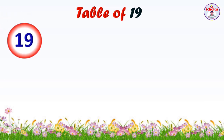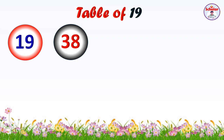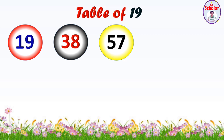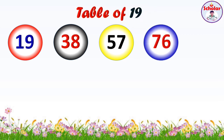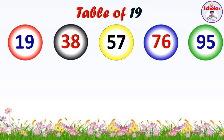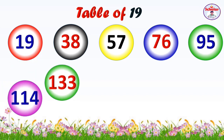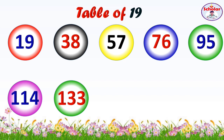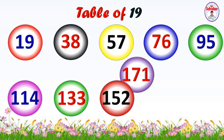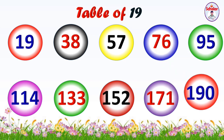Table of 19: 19×1=19, 19×2=38, 19×3=57, 19×4=76, 19×5=95, 19×6=114, 19×7=133, 19×8=152, 19×9=171, 19×10=190.